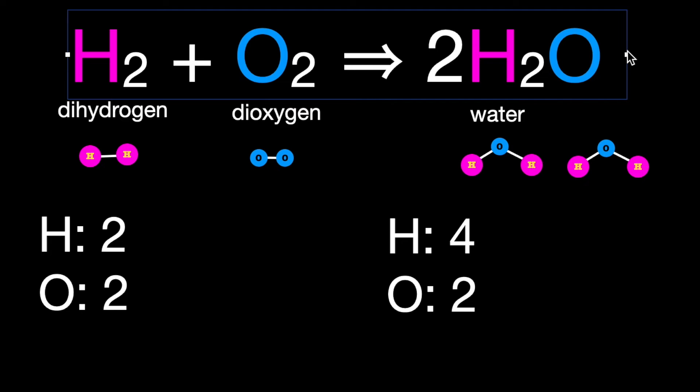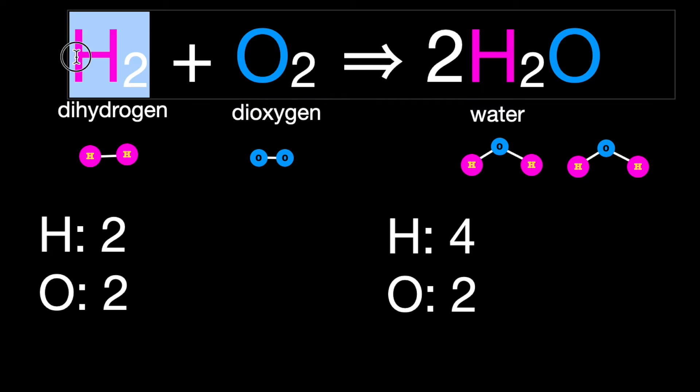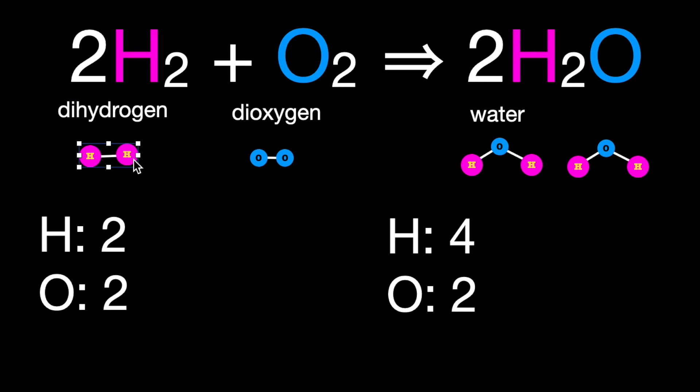What could we do? Well, we could double the amount of hydrogen we're putting into the equation, and by doing that, we'll double our molecules visually too. Two H2 means two molecules of H2, and when we count up each hydrogen atom, we get to four.